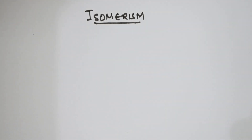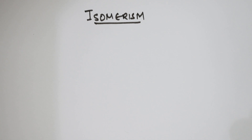Welcome back students to one more session of hydrocarbons. Today the topic we are going to learn is isomerism. We have seen the nomenclature of alkenes in the previous video. Once we learn the isomerism concept, it will be easy to teach geometrical isomerism and position isomerism.